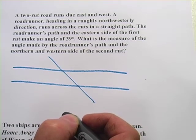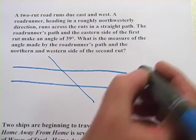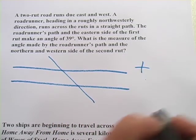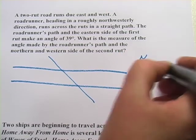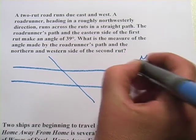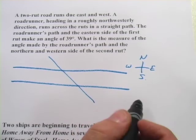The roadrunner's path and the eastern side of the first rut make an angle of 39 degrees. Now here, I'm just going to make a little compass rose just to keep myself on the straight and narrow. So north, east, south, and west, there we go.